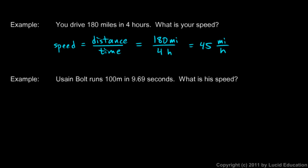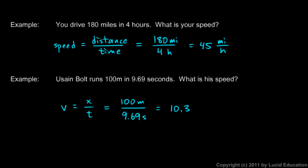Second example: Usain Bolt runs 100 meters in 9.69 seconds. Let's find the speed. I'm going to write V is X over T, but it's the same equation. The distance was 100 meters and the time was 9.69 seconds. 100 divided by 9.69 comes out to 10.3. We have to keep the units on our answer, so I write 10.3 meters per second. Just as miles per hour is a unit for speed, meters per second is a unit for speed.